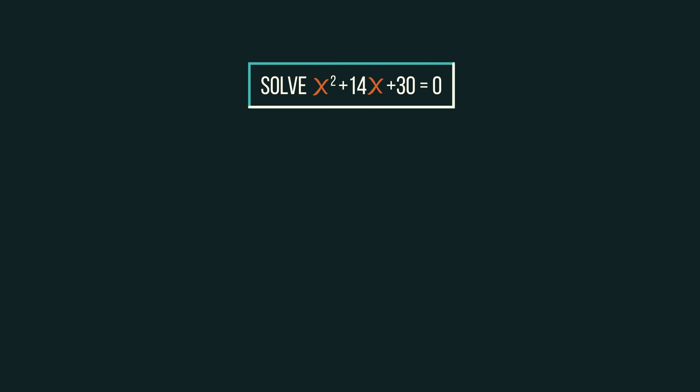So half of 14 is 7, and 7 squared is 49, so subtract 49 and we get this. Now for solving.